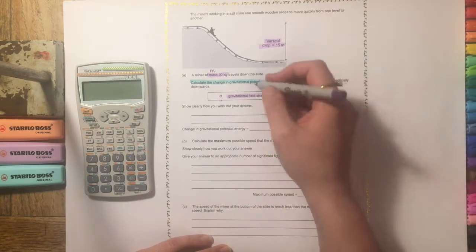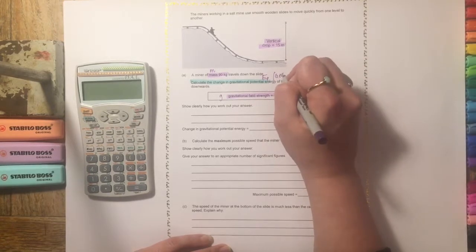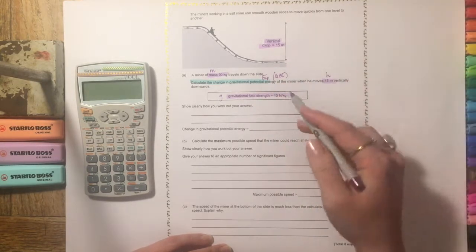And it's asking us to work out gravitational potential energy, which I would call Ep, but you could also call GPE if you wanted to. It doesn't really matter, it's just the abbreviation.